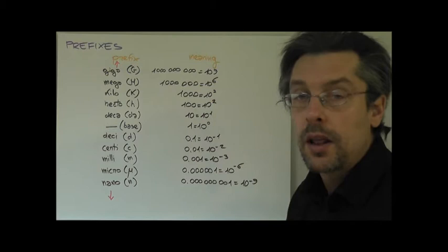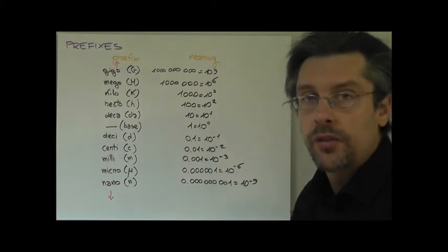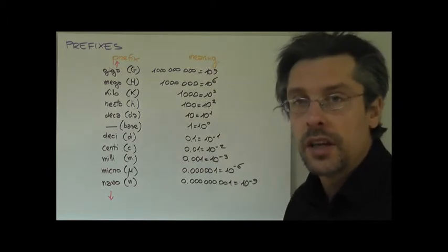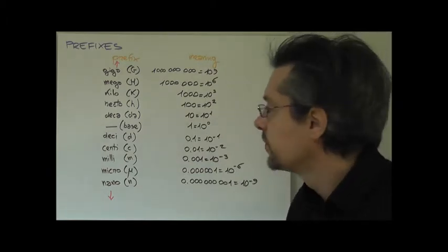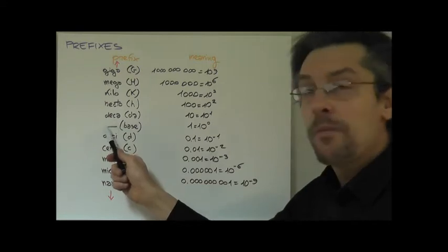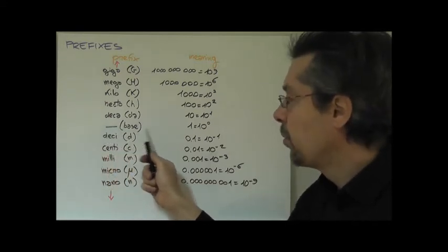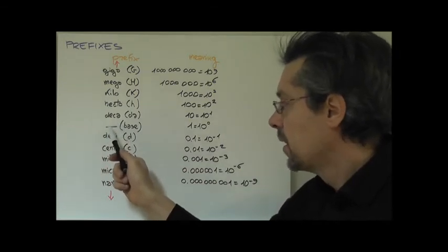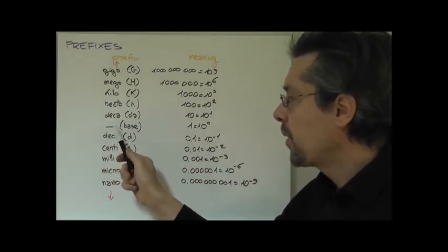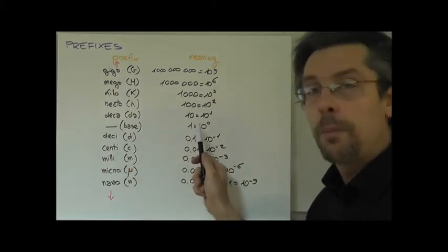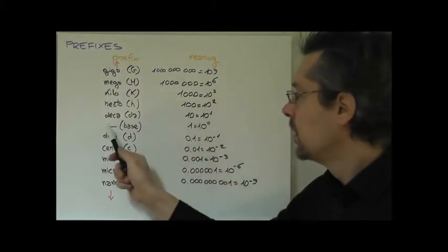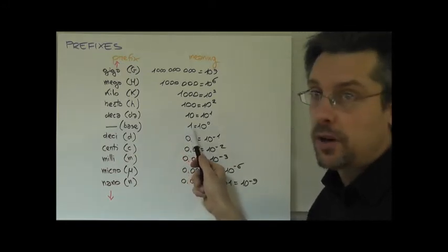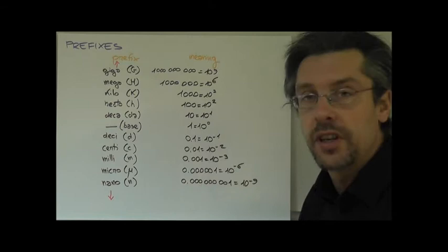Now, there is quite a large choice of prefixes that we can use. In this table you will see the most common ones. And we start at the middle, at the center of the table with the base unit. The base unit obviously doesn't have a prefix. Now each prefix corresponds to a power of 10. In the case of the base unit the power of 10 is obviously 1 or 10 to the power of 0.